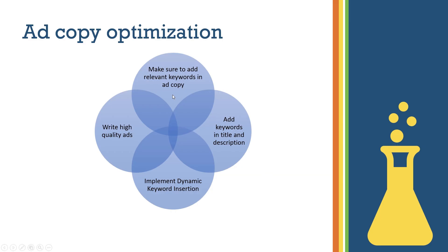The next tip is to focus on ad copy optimization. Make sure to add relevant keywords in the ad copy. For example, if you're selling tennis shoes and the keyword you've added is 'tennis shoes,' make sure you add those keywords in your descriptions and titles. Write high-quality ads because by doing so, you're actually going to increase your ad relevance. If you have those keywords in your ad copy, it's going to naturally bump up your score, and in the eyes of Google, your ad will be much more relevant.